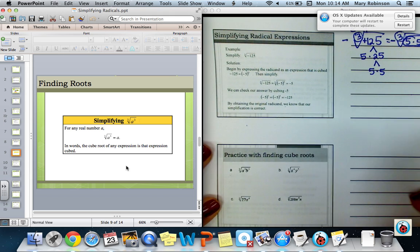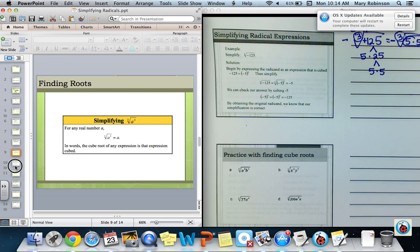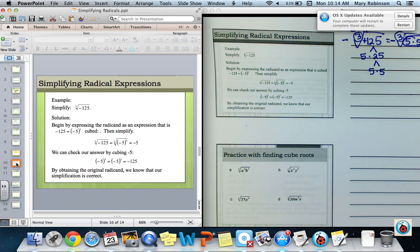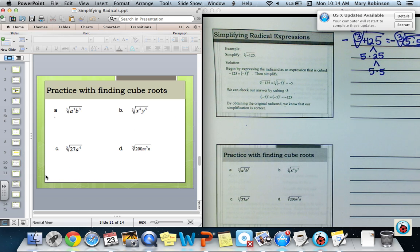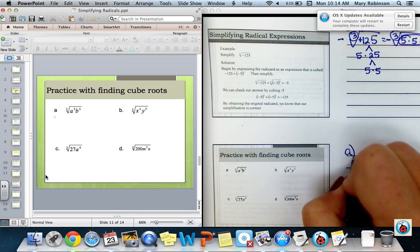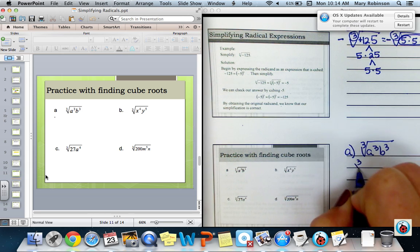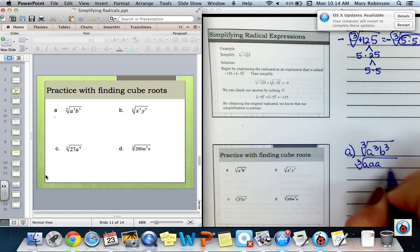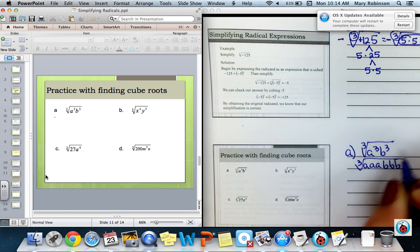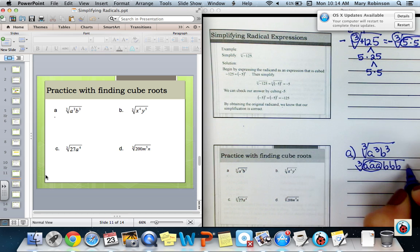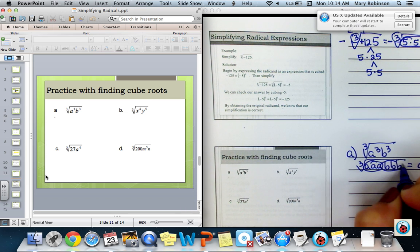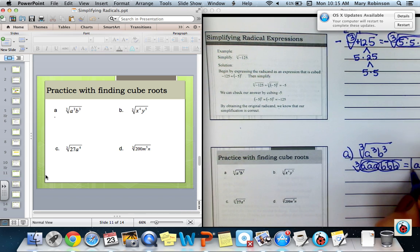So we'll move on here to the next slide on A. And we have the cube root of A cubed, B cubed. So A, A, A, B, B, B. I'm forming one group of A's and one group of B's. So my answer is simply A, B.